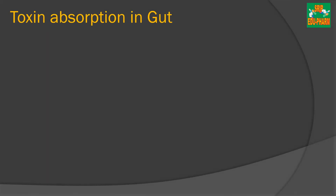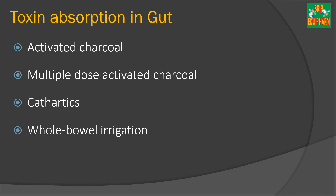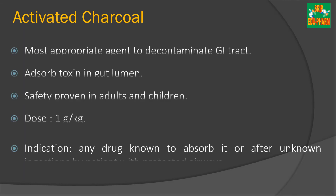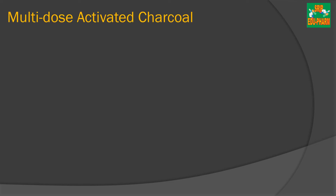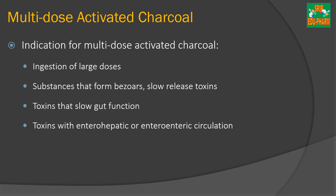Next is toxin absorption in the gut. Activated charcoal is the most appropriate substance to decontaminate the gastrointestinal tract. It helps to adsorb toxins in the gut lumen, is safe to use, and is inexpensive. The dose is 1 gram per kg. Multi-dose activated charcoal is indicated in cases of ingestion of large doses of poisonous substances, slow release of toxins, toxins that slow gut function, or toxins with entero-hepatic or entero-enteric circulation. The repeat dose is 0.25 to 0.5 gram per kg.